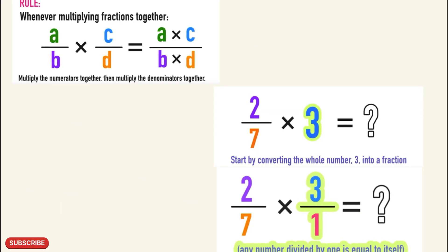Some things to keep in mind while multiplying fractions: when multiplying a fraction by a whole number, multiply the numerator by the whole number while keeping the denominator the same, then simplify if necessary. When multiplying two fractions, multiply the numerators together and the denominators together, then simplify if possible. That was all for today's video — don't forget to subscribe to Youth Tutors, hit the bell icon, and leave a comment if you have questions or topic requests. Bye bye!